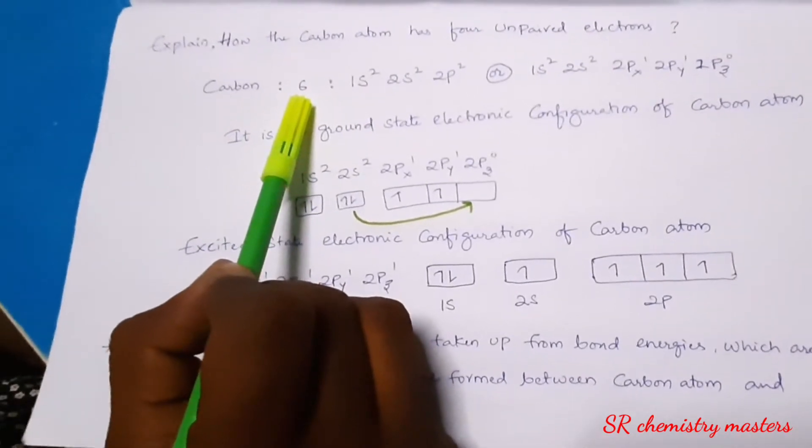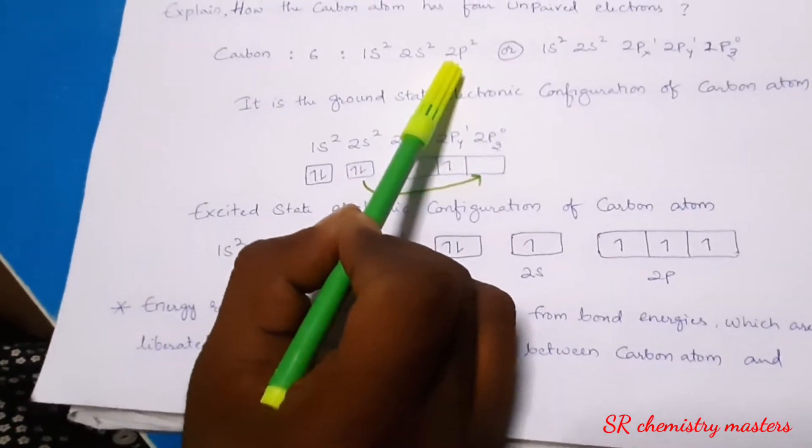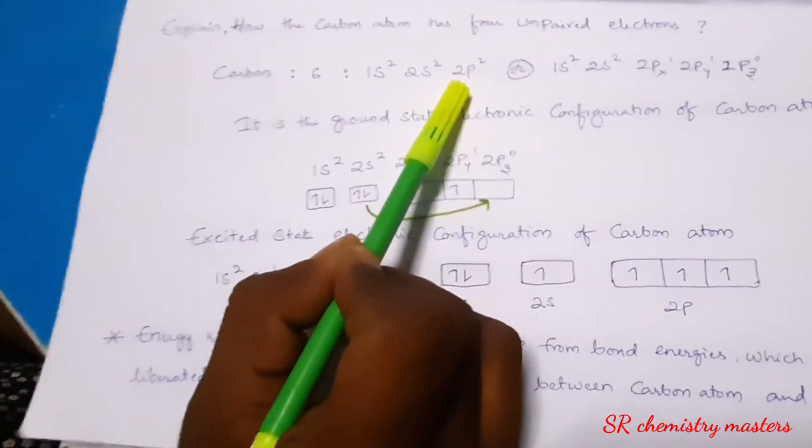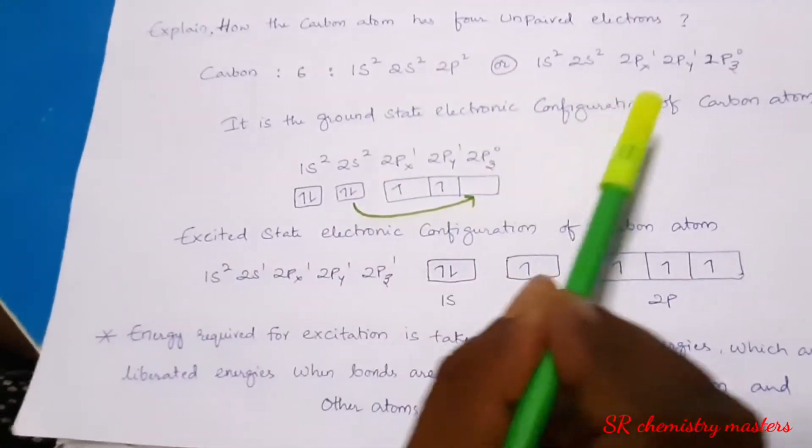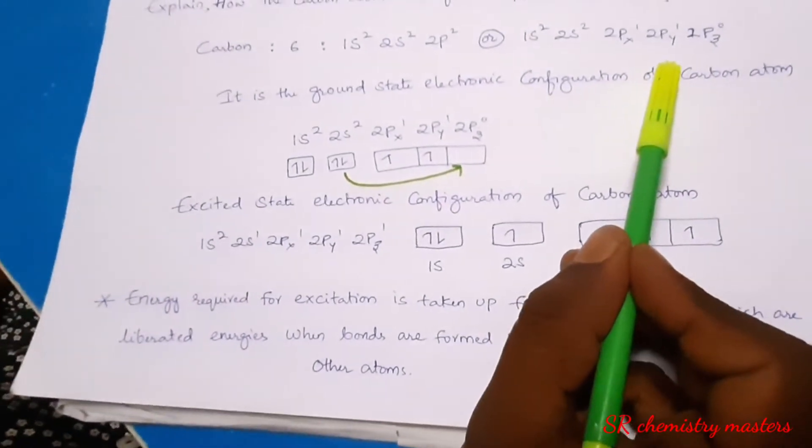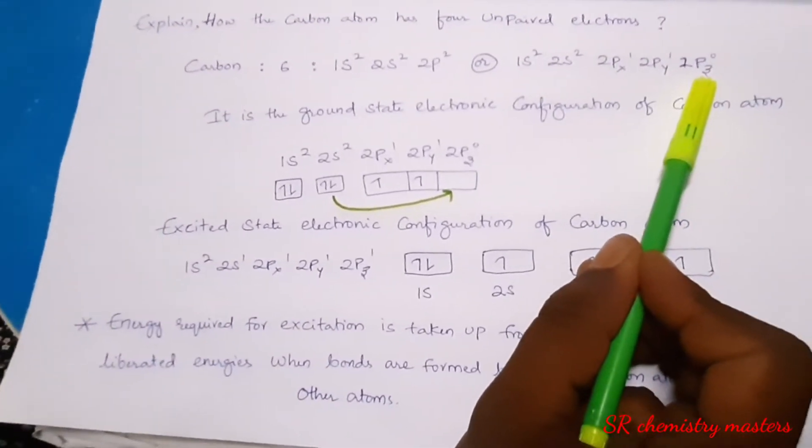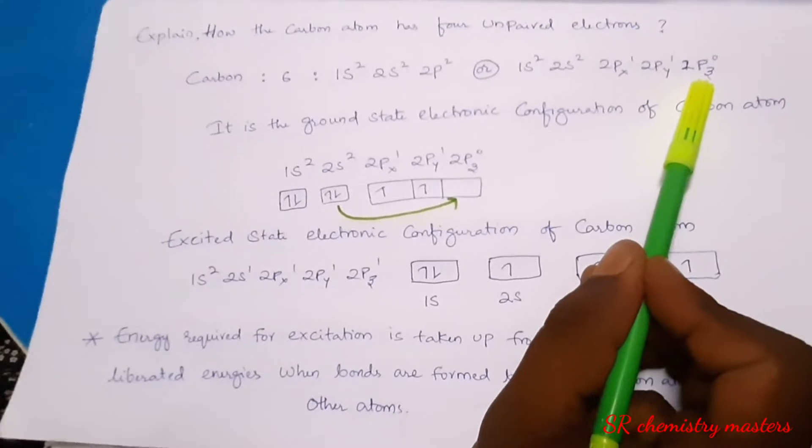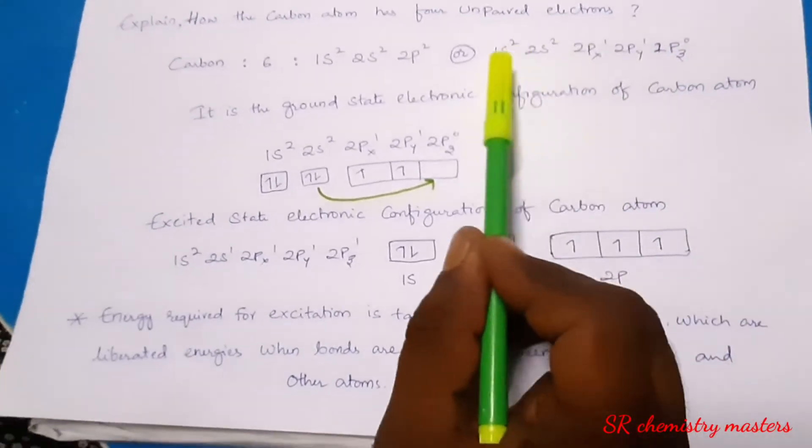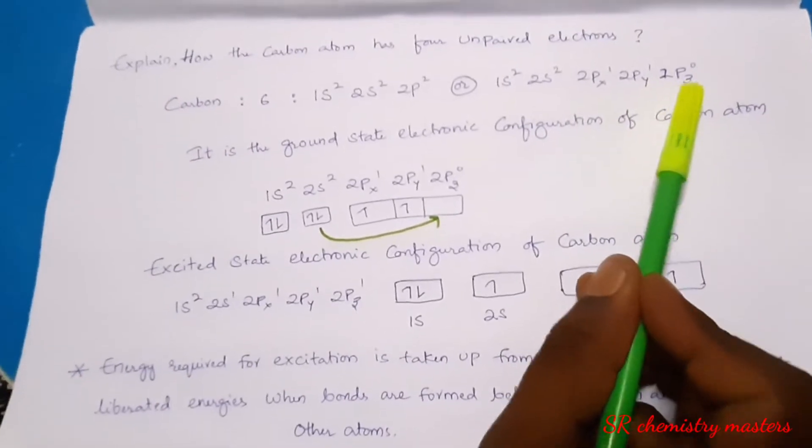If you see the electronic configuration of carbon atom, it is 1s2, 2s2, 2p2. When you represent it in the form of px, py, pz, as you all know, p orbital has 3 sub-orbitals: px, py, pz. If you see the electronic configuration in terms of this one, you can see that it is 1s2, 2s2, 2px1, 2py1, 2pz0.